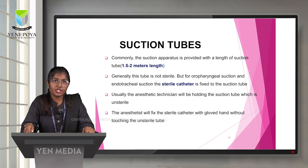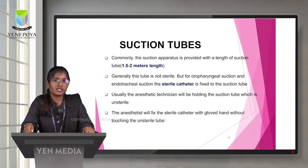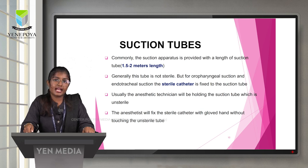The suction apparatus is commonly provided with a suction tube of 1.5 to 2 meters in length. Generally this tube is not sterile, but for oropharyngeal and endotracheal suction, a sterile catheter is fixed to the suction tube. Usually the anesthetic technician holds the unsterile suction tube, while the anesthetist fixes the sterile catheter with a gloved hand without touching the unsterile tube.